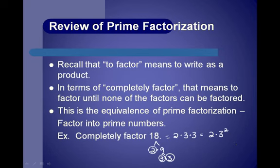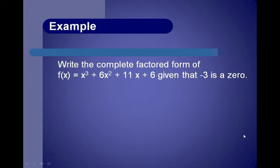The only difference of what we're going to be doing is instead of factoring numbers into prime numbers, we're going to factor polynomials into prime factors. Our first example: write the complete factored form of f of x equals x to the third plus 6x squared plus 11x plus 6, given that negative 3 is a zero.